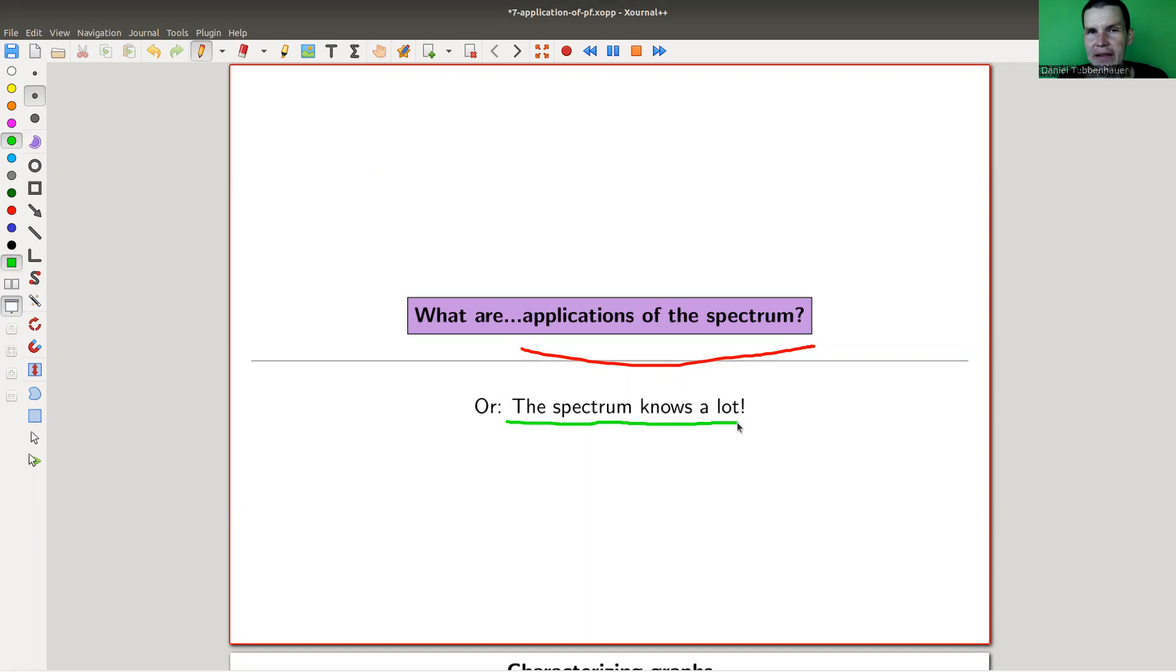And what is the advantage of the spectrum if it loses some information? Well, it's just really easy to compute. You just do it and you kind of know facts about your graph, which you usually don't get super easily because you need to do some brute force or some search. We'll see some examples.